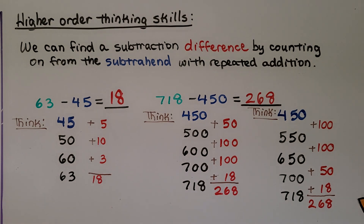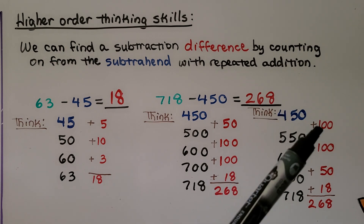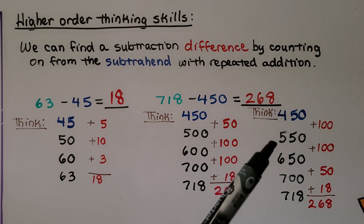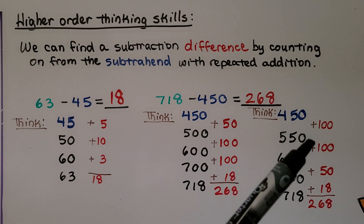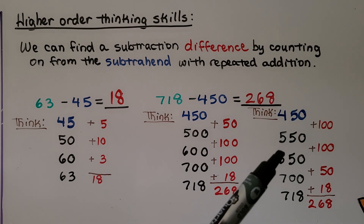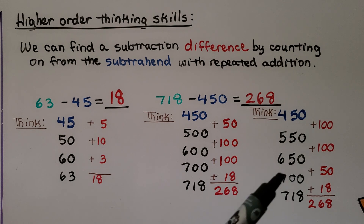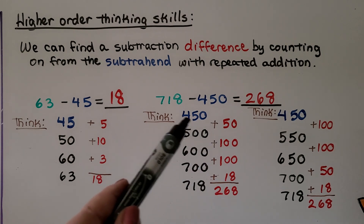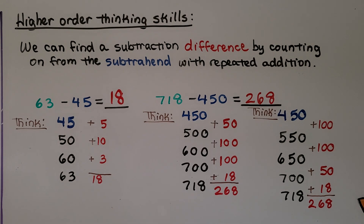Because we can add in any order, we could have started with four hundred fifty and added one hundred first to get five hundred fifty, then another hundred to get six hundred fifty, then the fifty to get seven hundred, then eighteen to get seven hundred eighteen. But it's still two hundred sixty-eight. We can add in any order, so we can count on from four hundred fifty with any groupings.